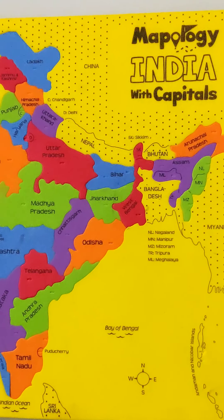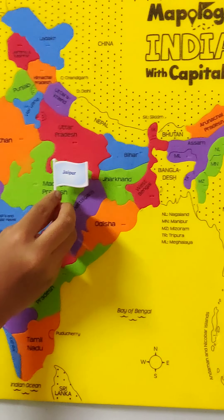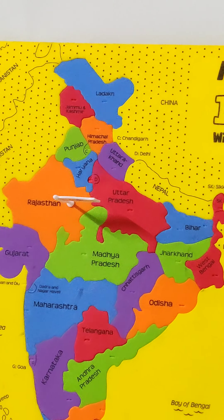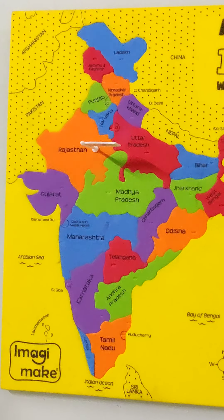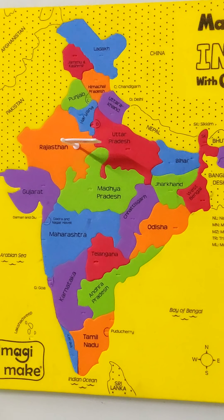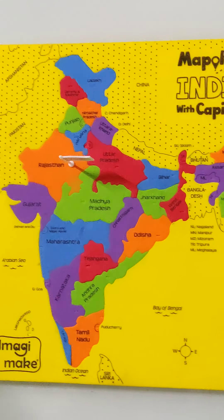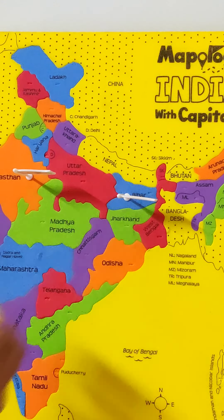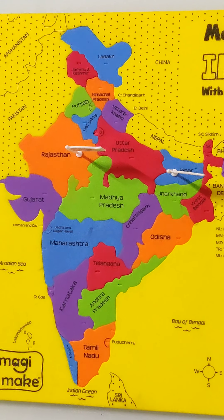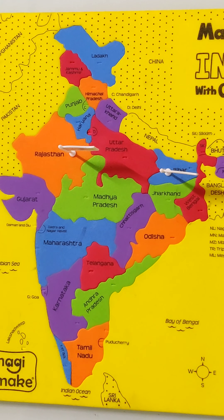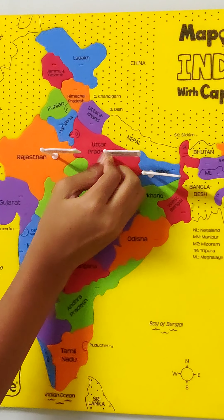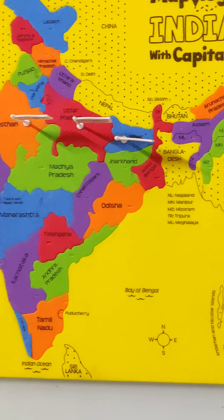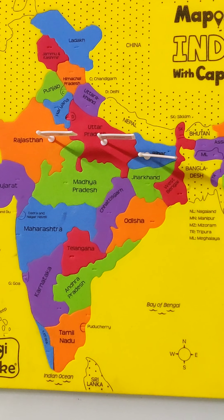What is the capital of Bihar? Patna. What is the capital of Uttar Pradesh? Lucknow. What is the capital of West Bengal? Kolkata.